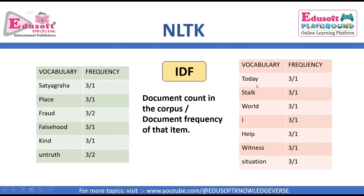Same — for 'today' it is 3 divided by 1, because total number of documents is 3 and 'today' appears in only 1 document. 'Stalk' is also 3 by 1, 'world' is 3 by 1, 'help' is 3 by 1, 'situation' is 3 by 1. So this is the basic difference between term frequency, document frequency, and inverse document frequency.